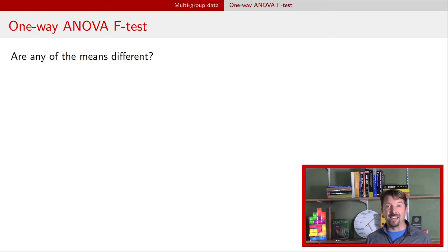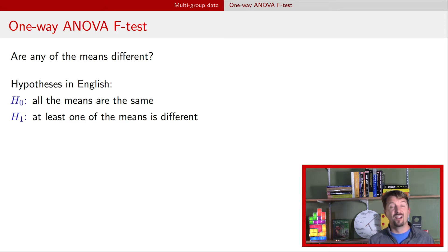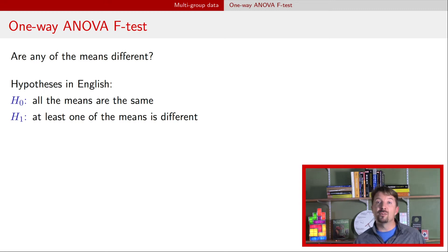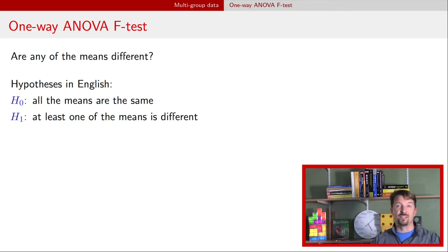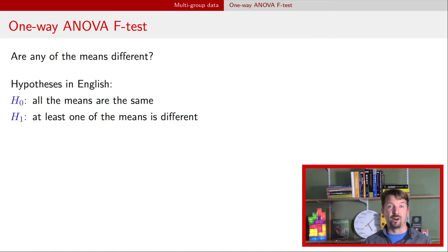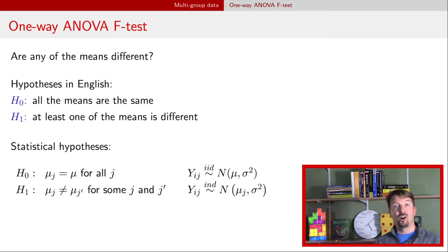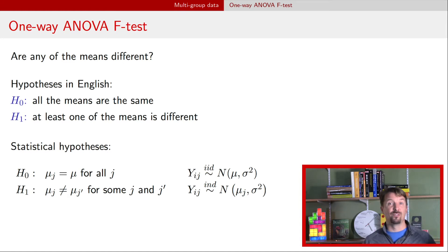One of the main questions you might want to ask is: are the means different? A null hypothesis in English says all the means are equal, whereas the alternative hypothesis says at least one of the means is different. Converting this to a statistical hypothesis, the null takes all individual group means mu J and makes them equal to one particular value mu. The alternative says at least one of those means is different from another, written as mu J not equal to mu J prime.